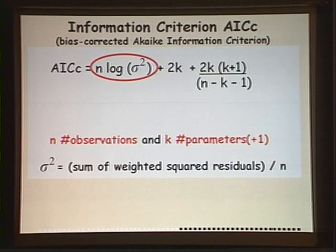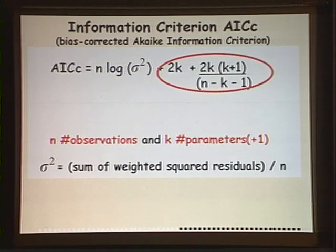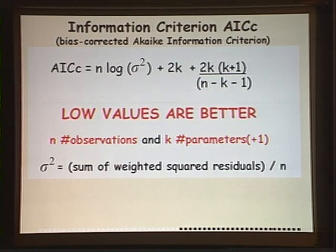Some measure of goodness of fit where n is the number of observations and sigma squared is the sum of weighted squared residuals divided by the number of observations. They all have some sort of penalty term for the number of parameters estimated, where k is the number of hydraulic parameters plus one because we're also estimating sigma squared. This looks empirical but it has a theoretical basis, and low values are better. We won't talk much more about AIC or its underpinnings.